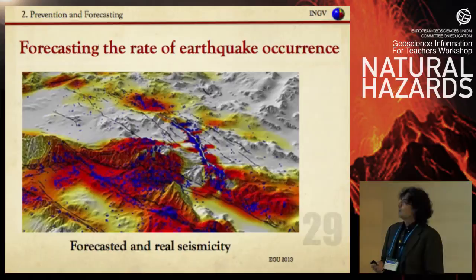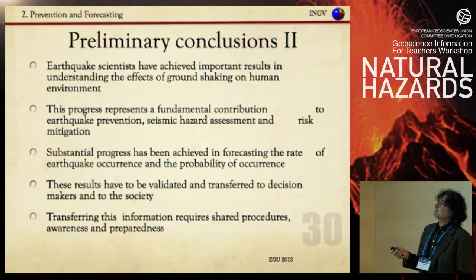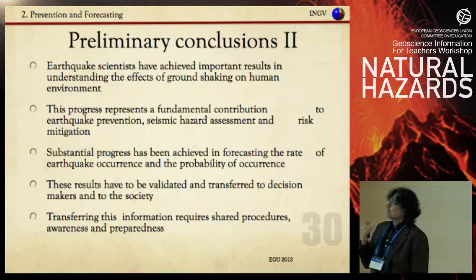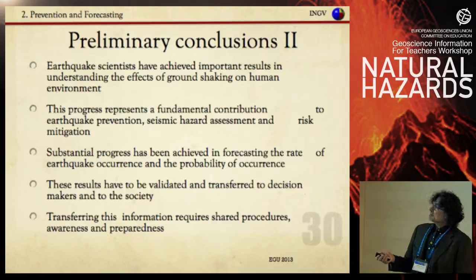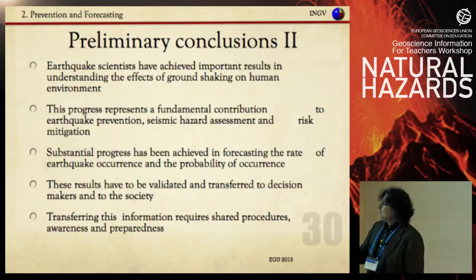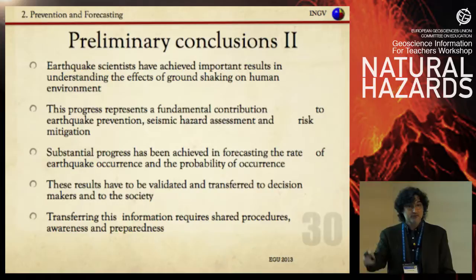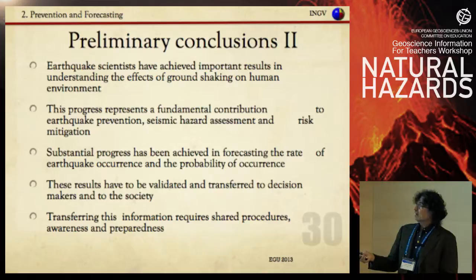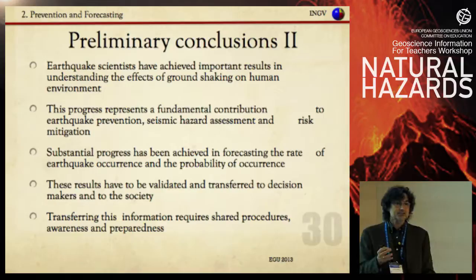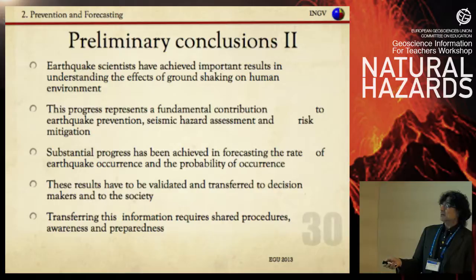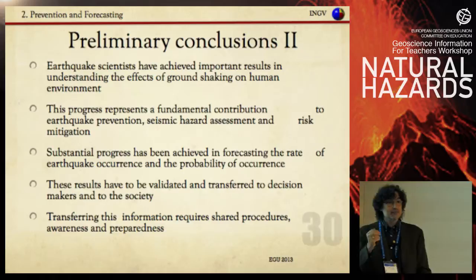Conclusion two: earthquake scientists have achieved important results in understanding the effects of ground shaking on the human environment. This progress represents a fundamental contribution to earthquake prevention, seismic hazard assessment, and risk mitigation. Substantial progress has been achieved in forecasting the rate of earthquake production and probability, but this is not yet mature enough to be applied to society. This does not mean we should stop doing science, but not all our science is ready for society. These results must be validated and transferred to decision makers. Validation is not only scientific — it is the assumption of responsibility for whether results can be transferred to society. Transferring this information requires shared procedures, awareness, and preparedness; society must be prepared to receive this information, and the work of teachers is fundamental for that.